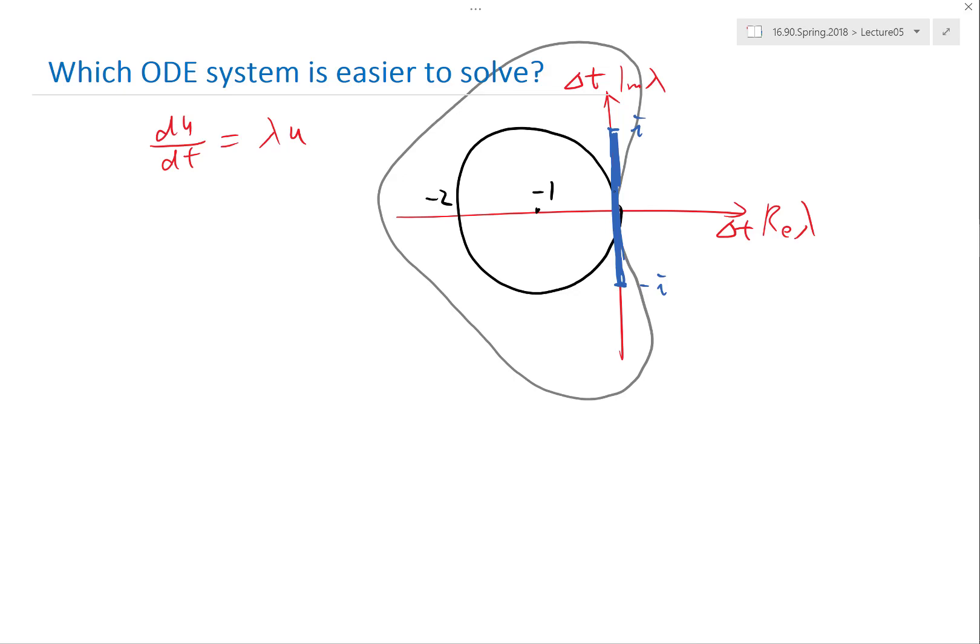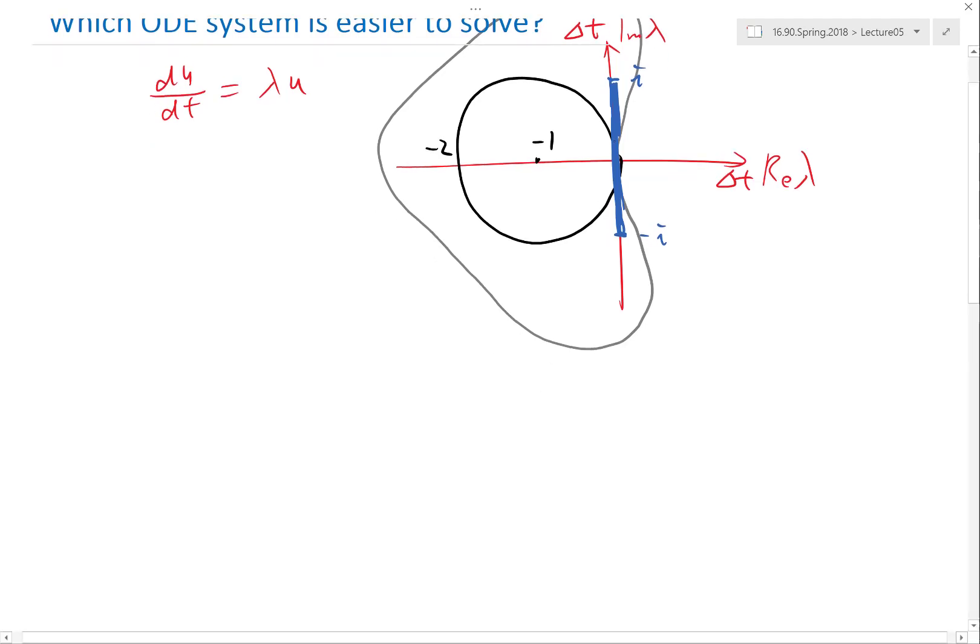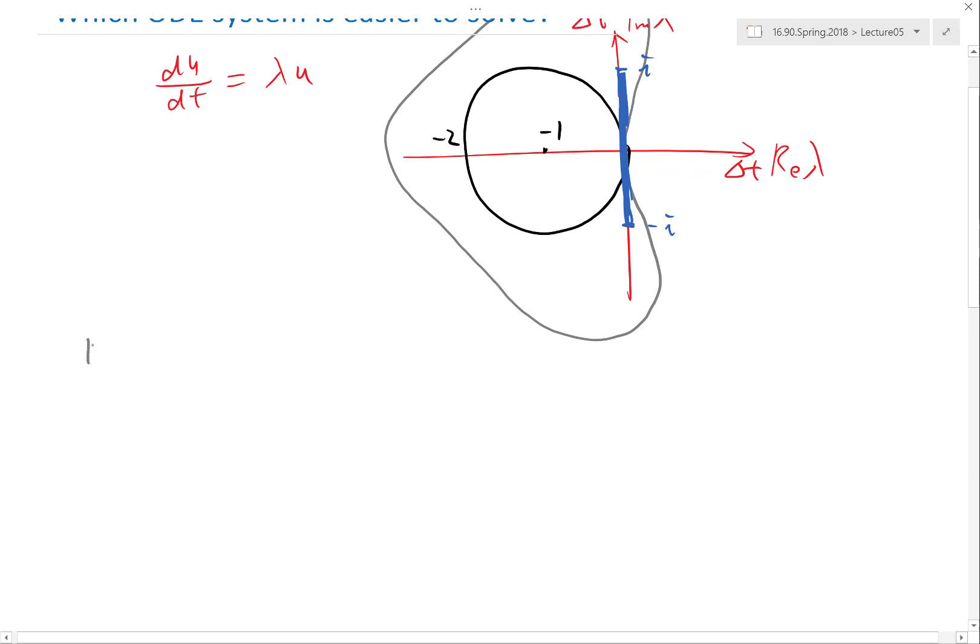So here's a question I have for you. Let's take a look at the stability region of the three schemes and I'll give you two equations and I'll ask you which one is easier to solve. Equation one: